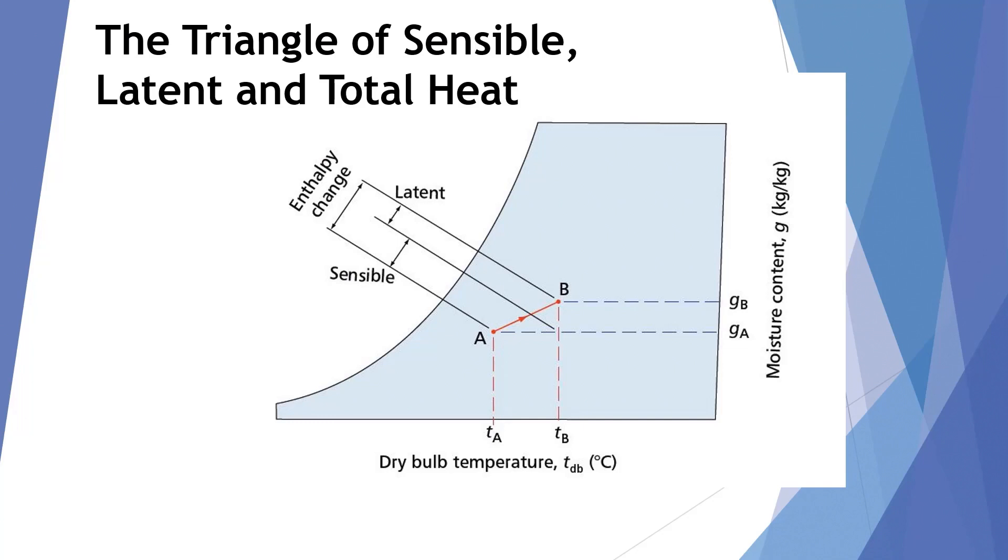One of the things that we can see on the psych chart is the enthalpy change between sensible and latent as the refrigerant goes through either the evaporator coil or the condenser coil. This is called the triangle of sensible, latent, and total heat.